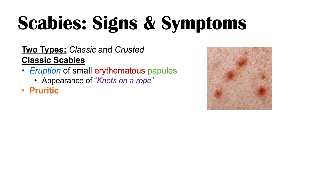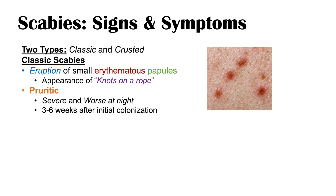The hallmark symptom of classic scabies is pruritus, and it's generally severe, and worse at night — a very common and characteristic finding. The pruritus begins about three to six weeks after initial colonization, due to a delayed hypersensitivity reaction to the mites. However, if an individual was previously infected and then reinfested, pruritus can develop more quickly, within one to three days after reinfestation.